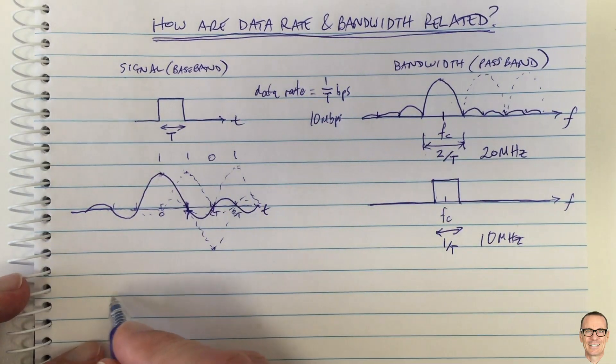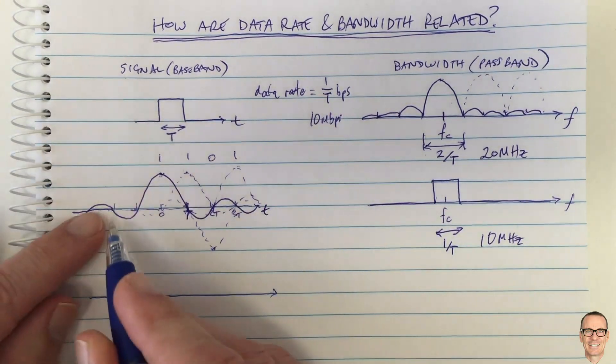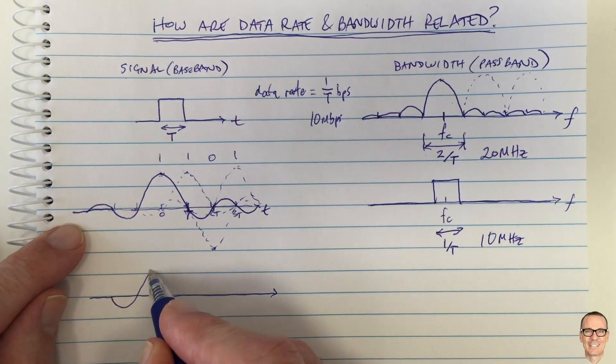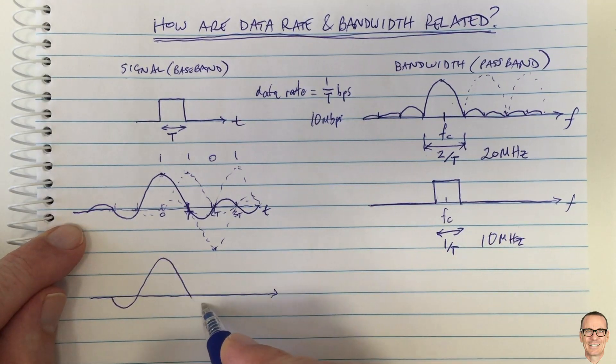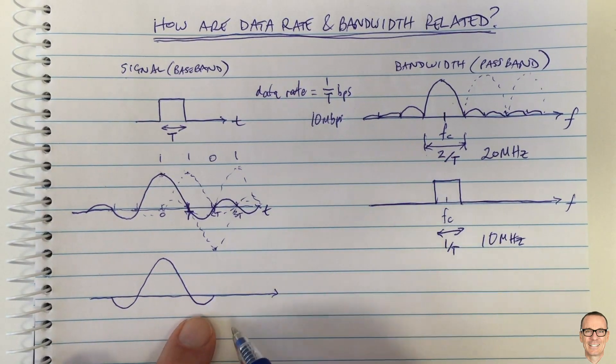Well, in practice you pick a time domain signal which looks like this but doesn't go forever. So we pick this one here, for example. This is often the one that's picked, which is time limited, and so that's going to be the signal for representing a 1. The negative of that would be the signal for representing a 0.